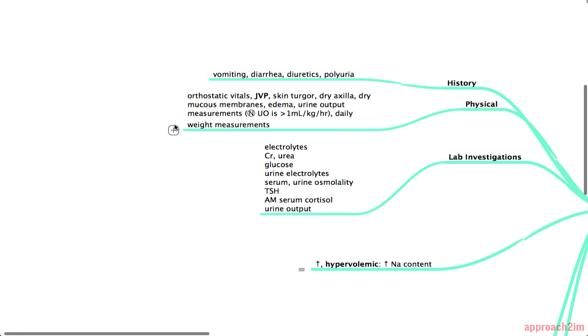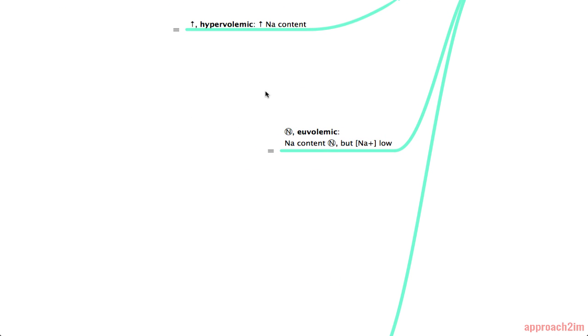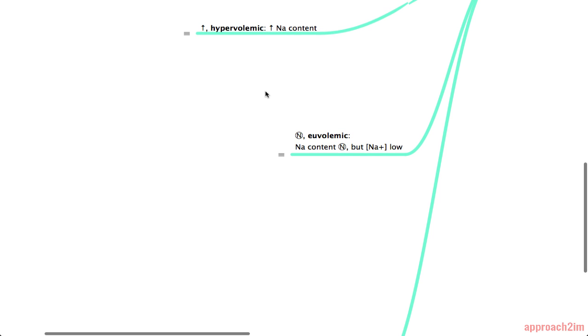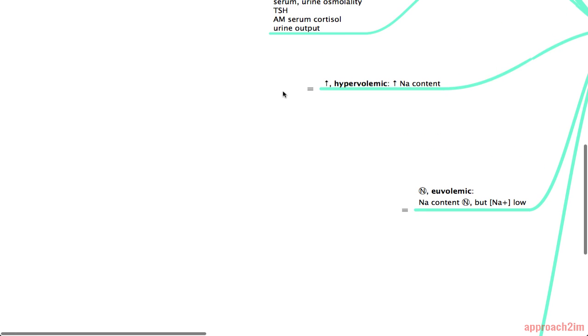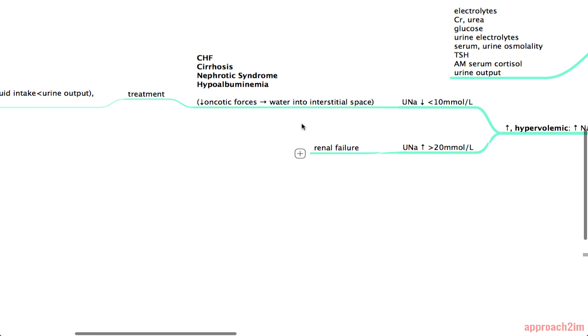Alright so now you've done your history and physical and hopefully you have a good idea of their volume status. In these next three branches you'll see some conditions in bold and those are the ones that are most commonly seen and commonly the cause of the hyponatremia. So let's start with hypervolemia. Now if they're hypervolemic they often have a high JVP and they're going to have pedal edema. Your next step is to do a urine sodium measurement.